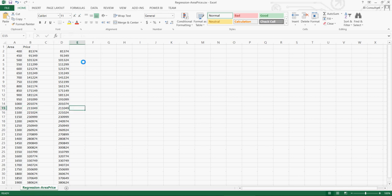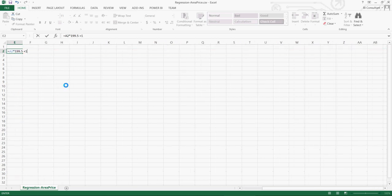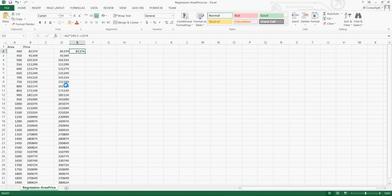So I'll just show you one more time. What I have done is I said area multiplied by 199.5, which is the coefficient and intercept is 1574. So area multiplied by 199.5 and addition 1574, a constant.